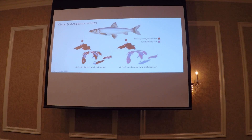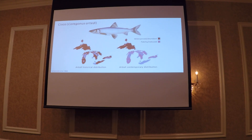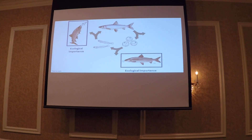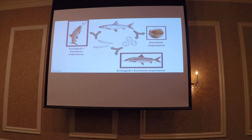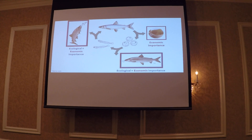Cisco are a native prey species to the Great Lakes that historically were once widespread and abundant, but due to overharvesting, invasive species, and habitat degradation, their populations are nowhere near where they used to be. However, they fulfill a lot of really important ecological roles — at every single life stage, cisco is consumed by some organism. Some of these predators also have economic value, like lake whitefish and lake trout. And cisco themselves have become a popular source of caviar in Europe, so they also hold a direct economic role.